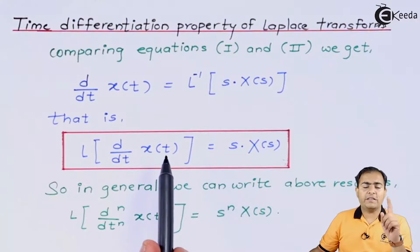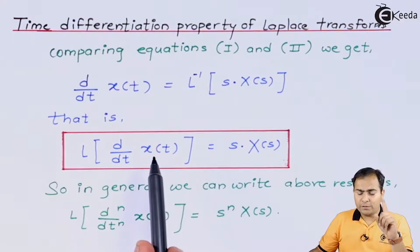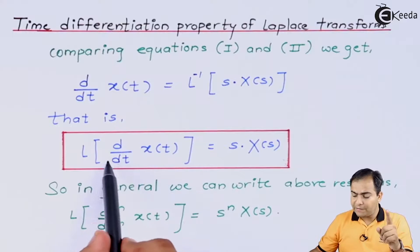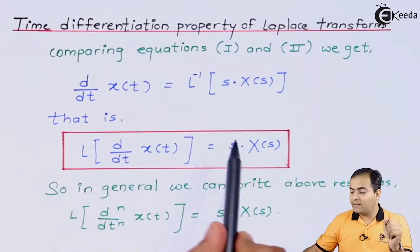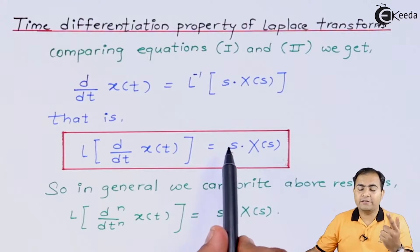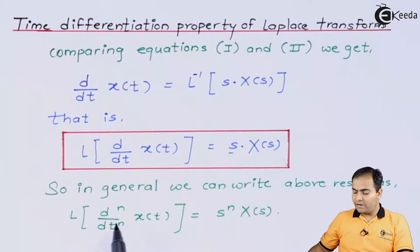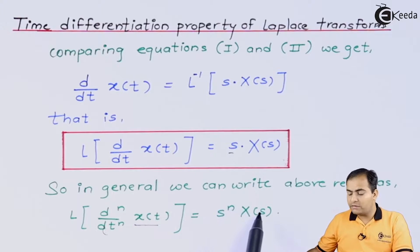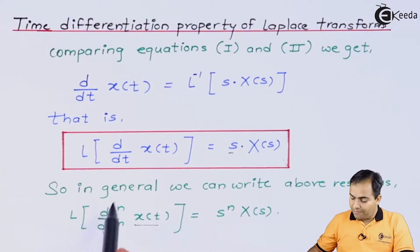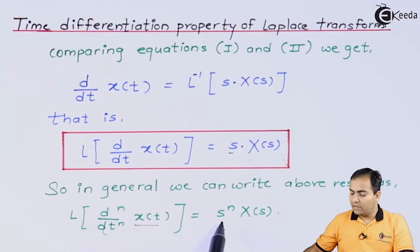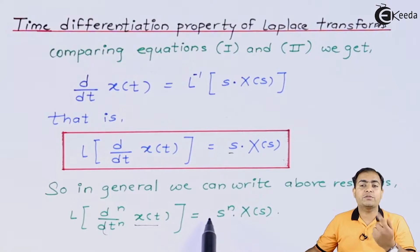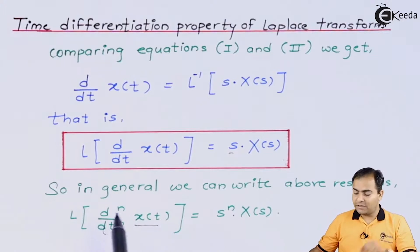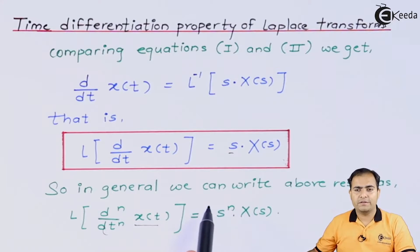One important thing to remember: if the order of differentiation is n, then the power of s is also n. In general, the Laplace transform of the nth-order derivative of x(t) is s^n·X(s). So if the differentiation order is 2, the power of s is 2; if the order is 3, the power of s is 3.